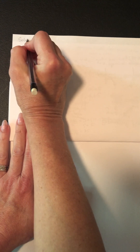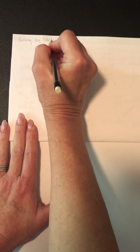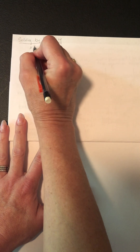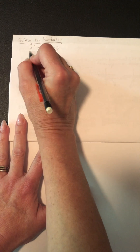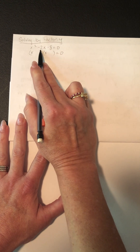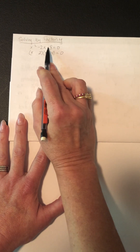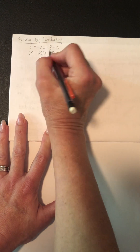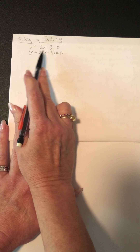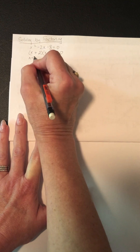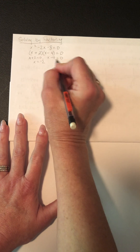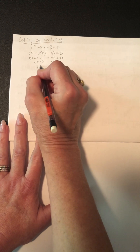One of the easier ways is solving by factoring. It only works if the expression is factorable. For example, x squared minus 2x minus 8 equals zero: x times x gives x squared. What multiplies to 8 and subtracts to give 2? That's 2 and 4. The signs are different and the bigger product is negative, so the 4 is negative and 2 is positive. By the zero product property, x plus 2 equals 0 gives x equals negative 2, and x minus 4 equals 0 gives x equals 4.